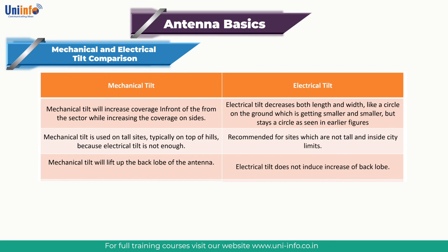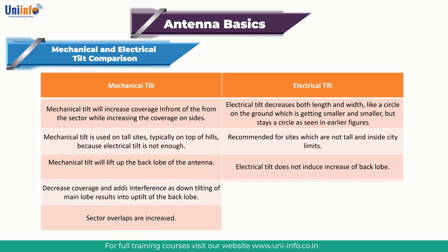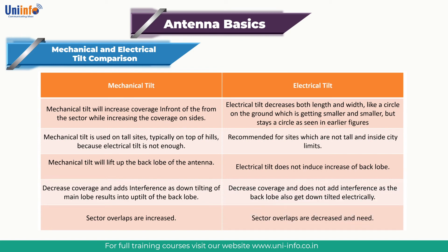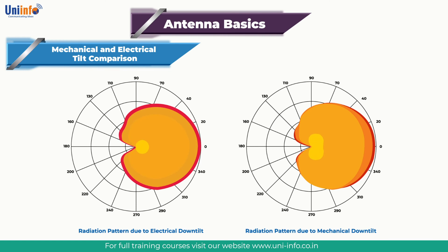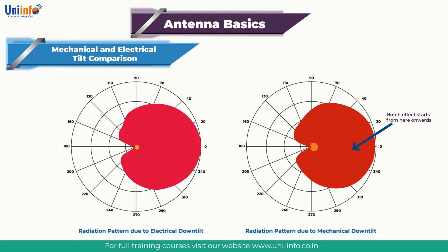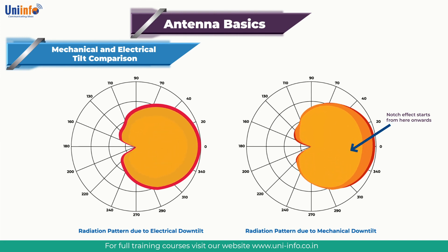Electrical tilt decreases coverage without adding interference, as the back lobe also gets down-tilted electrically. In mechanical tilt, sector overlaps are increased; in electrical tilt, sector overlaps are decreased. The figure on screen shows the difference in radiation patterns between mechanical and electrical tilt. Mechanical tilt results in pattern blooming, creating a notch effect in the front lobe as tilt increases, while electrical tilt suppresses pattern blooming by tuning individual radiating elements of the antenna array. Mechanical tilt fails in this regard as it treats the entire antenna as a fixed single unit.